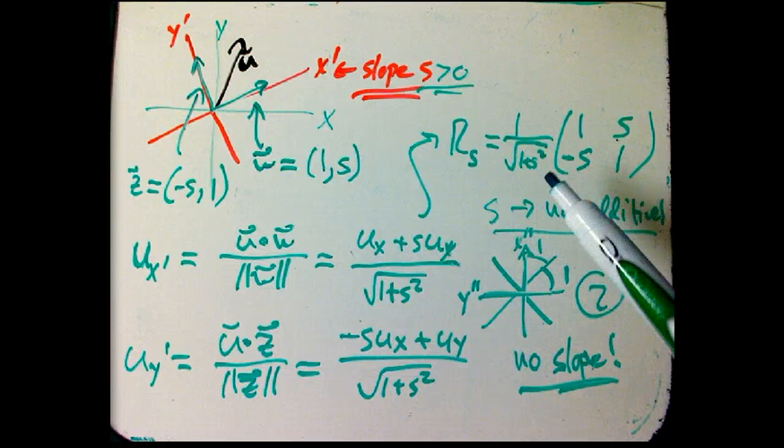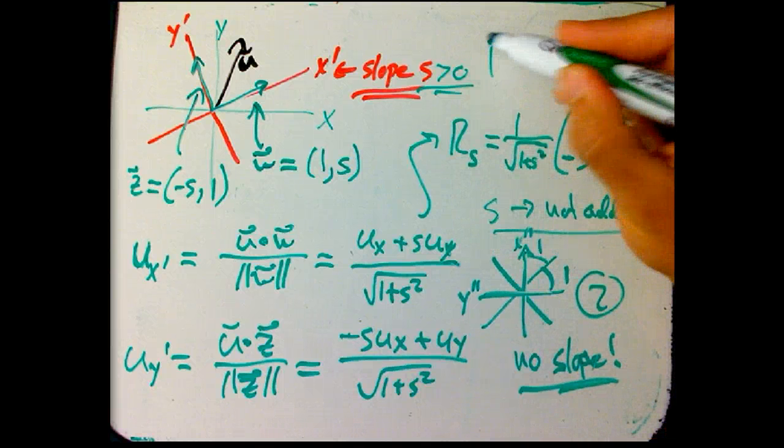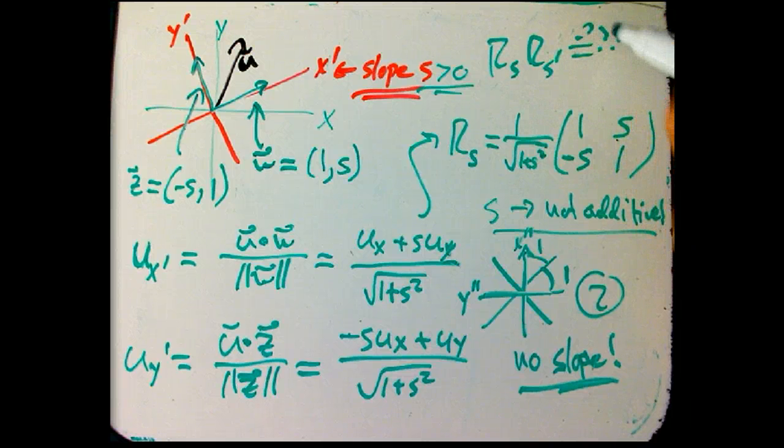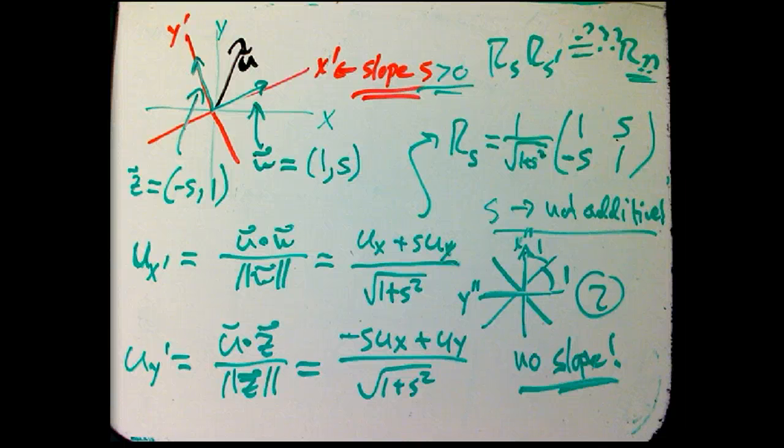So that's one other problem with slope, is there's certain rotations where you can't actually use slope as a parameter anyway. It's a little bit of a lie to imply that we always could. And it's certainly not additive. A 1 slope rotation combined with another 1 slope rotation is an infinity slope rotation. So, whatever the law is for combining rotations in terms of slopes, like R_S R_S' is R something, it's a complicated formula.